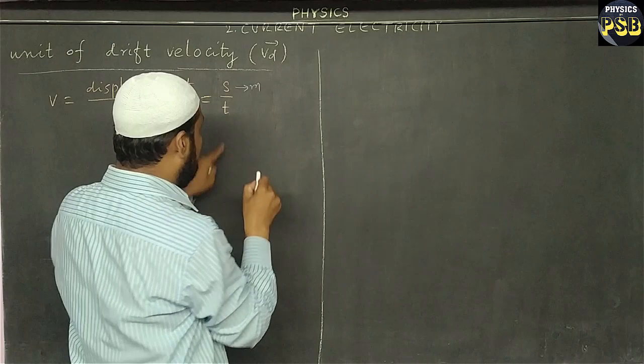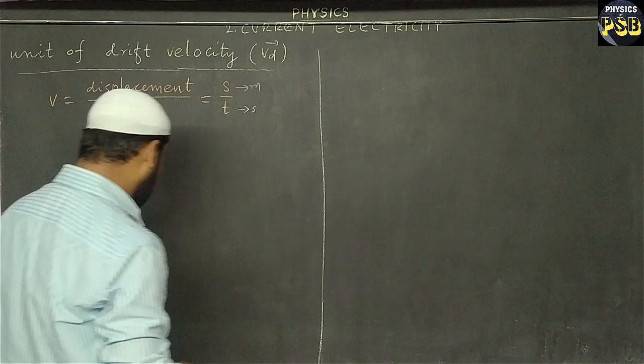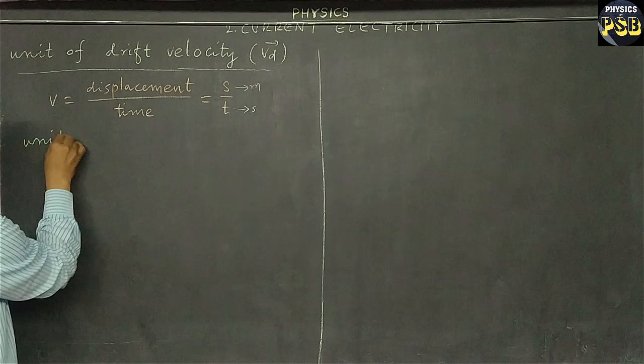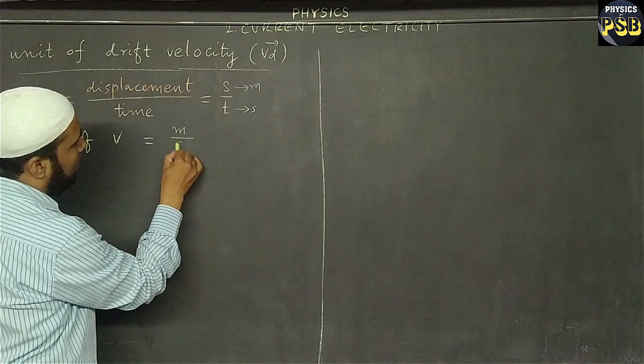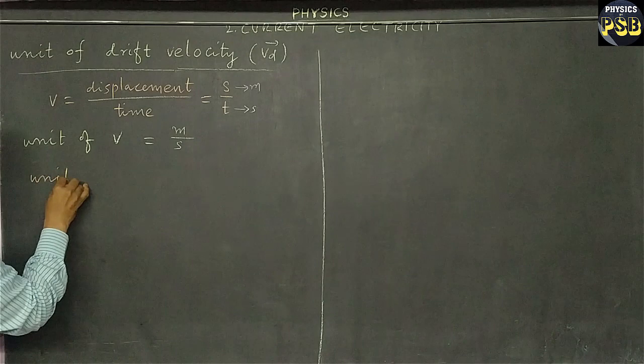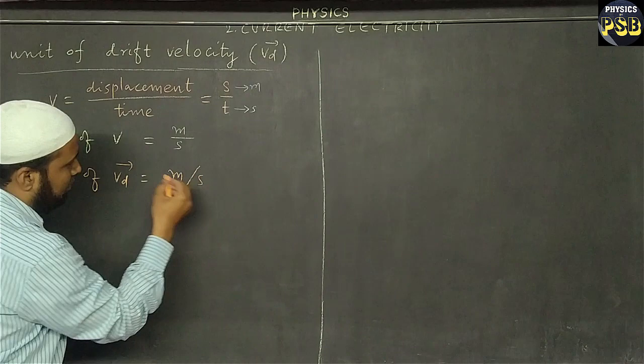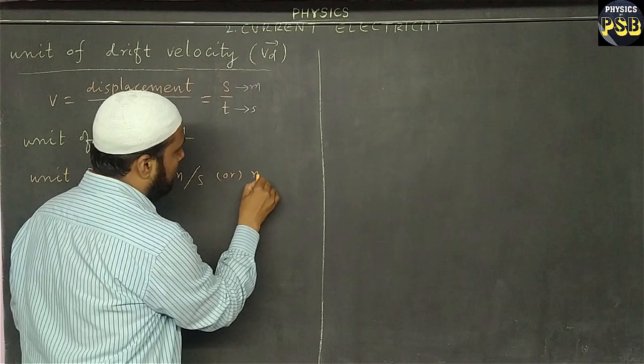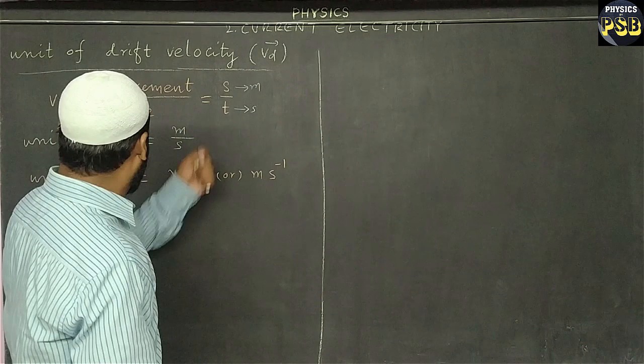The unit of displacement is meter and the unit of time is second, so the unit of velocity is meter per second. The drift velocity also has the same unit — meter per second — which can also be represented as ms to the power minus one.